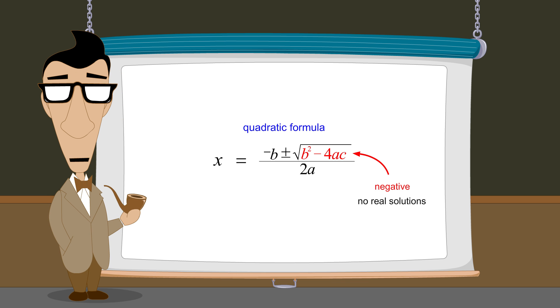However, what if there were numbers that could represent the square root of a negative quantity? Then every quadratic equation would have solutions.